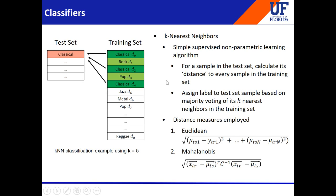To perform K-nearest neighbor classification, we need a notion of distance. In our experiments we used two: the Euclidean distance, which is the straight Euclidean distance between the mean vectors of two songs, and the Mahalanobis distance, which also considers the inverse of the covariance matrix. These are the two distance measures we employed.